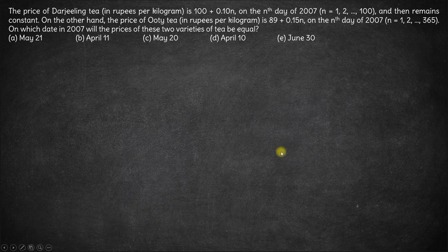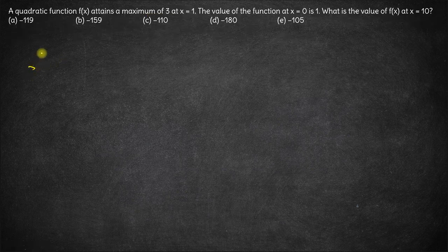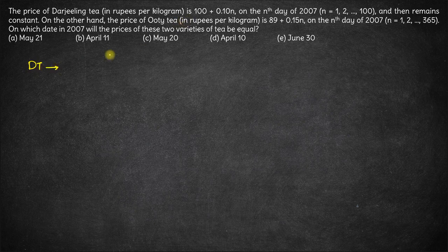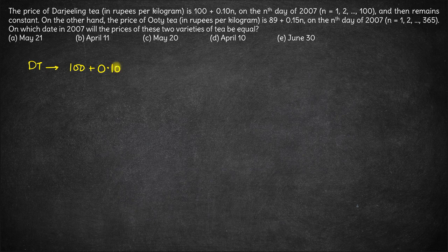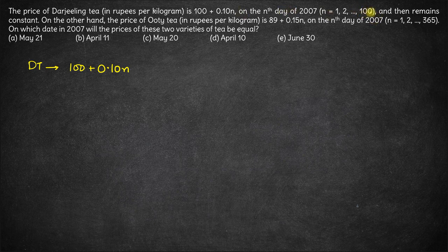Hi, here in this question we are given the price of Darjeeling tea in rupees per kilogram. For Darjeeling tea, the price is 100 + 0.1n on the nth day of 2007, where n is from 1 to 100. The price keeps changing till the 100th day and then remains constant.